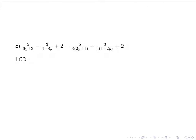So for my LCD, I have a 3, I have a 4, and I have a 1 plus 2y. Notice 1 plus 2y and 2y plus 1 are the same, so I don't need to do it twice. I do have the 3 and the 4, so that will be 12. So 12 times my 2y plus 1, or 1 plus 2y. It doesn't matter, they're the same thing.